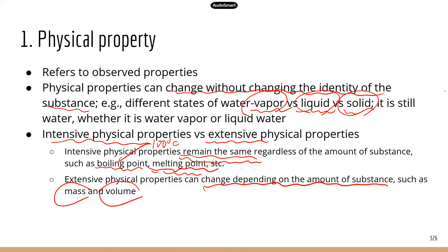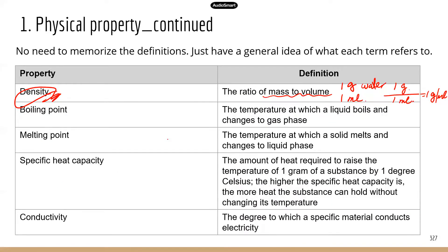Density is an intensive physical property — it doesn't matter how much substance you have, the density will remain the same. Whether you have one gram of water or 100 grams of water, the density of water will be the same. Boiling point is the temperature at which a liquid boils and changes to gas phase. You probably see this a lot in daily life — when you boil water, you can see the steam coming up, and that's because water reaches the boiling point and the liquid water converts to water vapor.